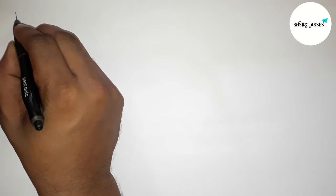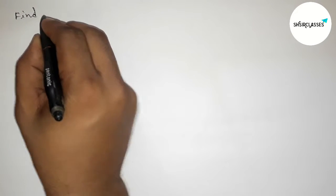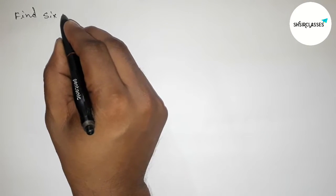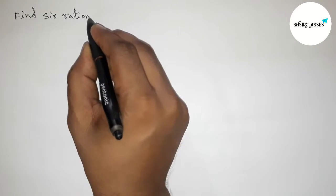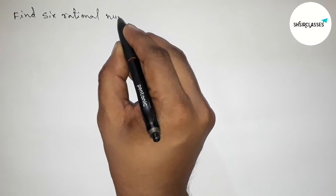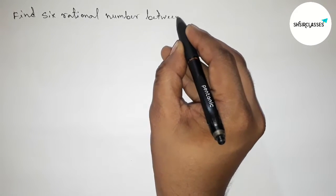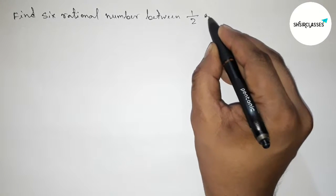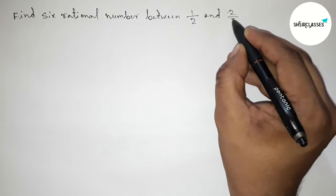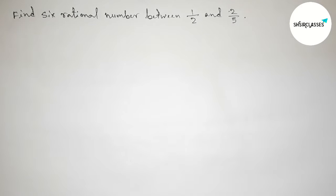Hi everyone, welcome to SI Share Classes. Today in this video we have to find six rational numbers between 1/2 and 2/5 in an easy way. Please watch the video till the end, so let's start.